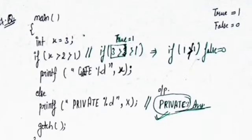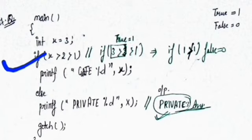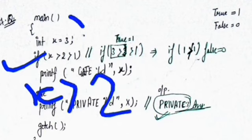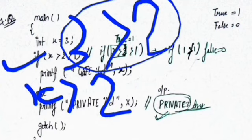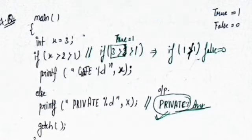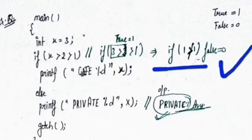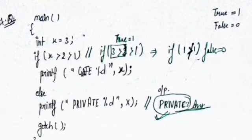Question 17 involves an if condition using two nested conditions: if x greater than 2, then 2 greater than 1. First, x greater than 2 means 3 greater than 2 which is true, giving value 1. Then if 1 greater than 1 is false, so the else condition prints '3 is greater than 3' — wait, the else output is printed. Option '3 is greater than 3' is the correct answer.